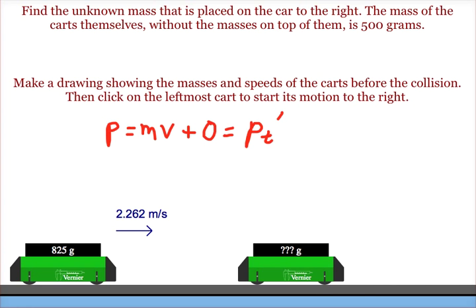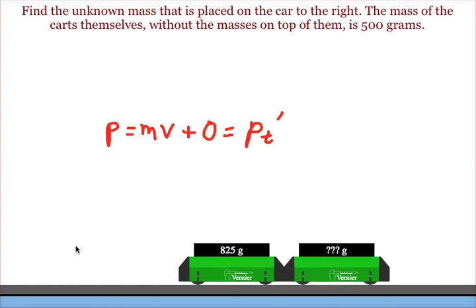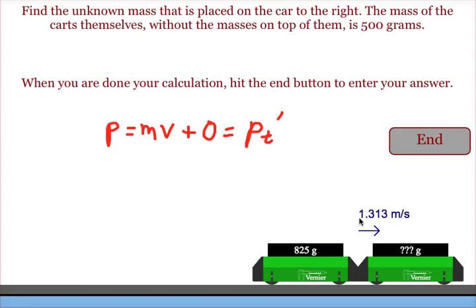So we've got the total momentum before the collision. We click on this car, it will move toward the other car, they collide and stick together, and we'll be told their final speed.